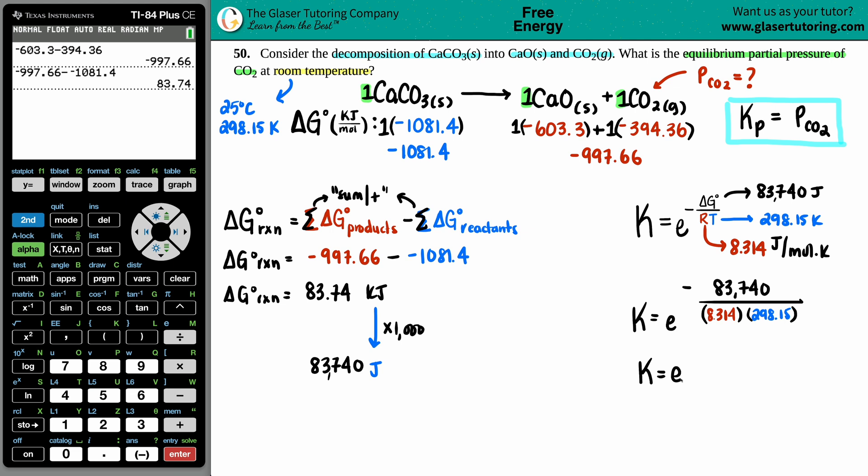What I would do is I would just simplify this into one number so I could just take the e raised to that value. So let's see, now there's a negative, so I'm going to say negative 83,740 divided by 8.314. And now since I'm not using parentheses in my calculator but I want to put that 298 in the denominator, I'm going to press divide. If you put times, the calculator will think that it's in the numerator. And then press enter.